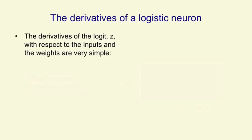To get the derivatives of a logistic neuron with respect to the weights, which is what we need for learning, we first need to compute the derivative of the logit itself, that is the total input, with respect to a weight. That's very simple.